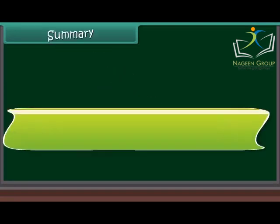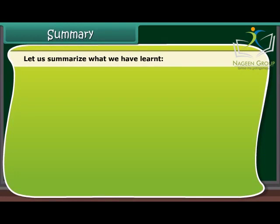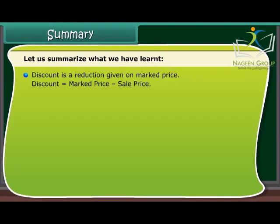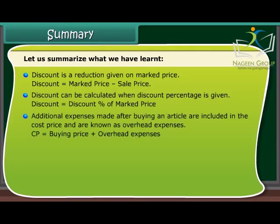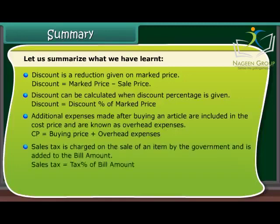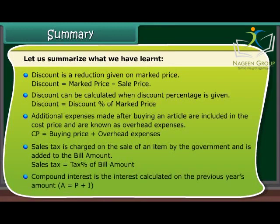Summary: Discount is a reduction given on marked price. Discount equals marked price minus sale price. Discount can be calculated when discount percentage is given: discount equals discount percentage of marked price. Additional expenses made after buying an article are included in the cost price and known as overhead expenses. CP equals buying price plus overhead expenses. Sales tax is charged on the sale of an item by the government and is added to the bill amount. Sales tax equals tax percentage of bill amount. Compound interest is the interest calculated on the previous year's amount, where A equals P plus I.